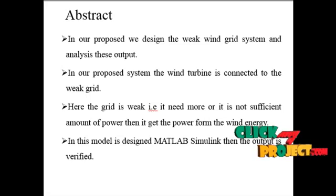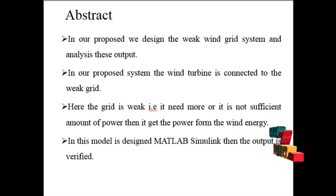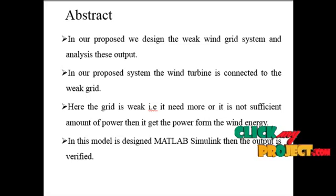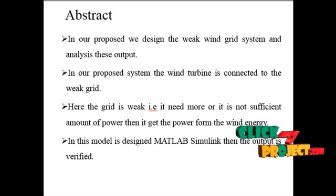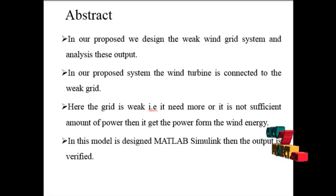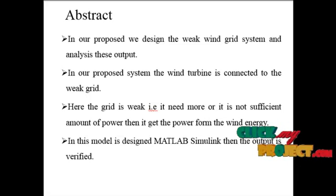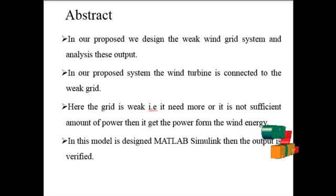Here we use the wind farm to maintain the power quality in the grid. Suppose the power is reduced and the weak grid condition is generated — then automatically the grid gets voltage from the wind turbine. So the wind farm gives a sufficient amount of voltage for the weak grid. In that case, we use the wind as a renewable energy source, so it does not need any other system for generating it.